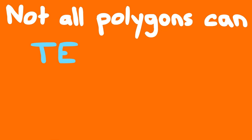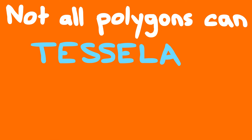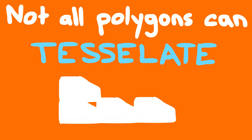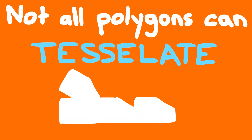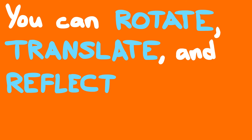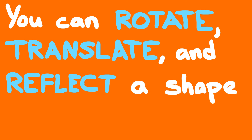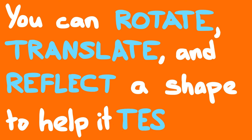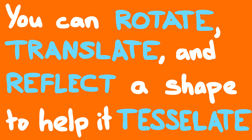Rotate, turn it round. Translate — shift it left, right, up or down. Reflect — copy it across an axis of symmetry.